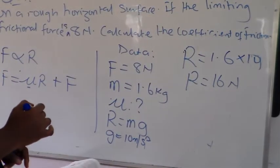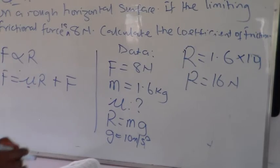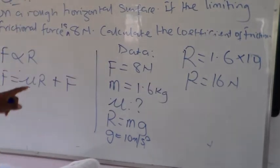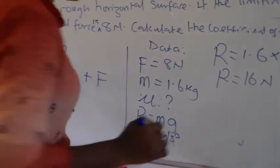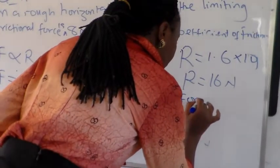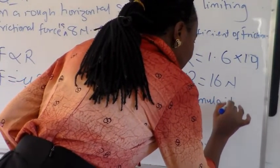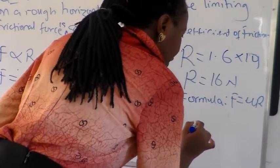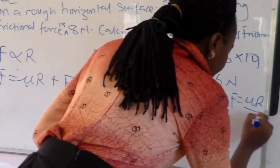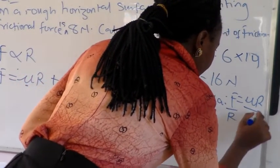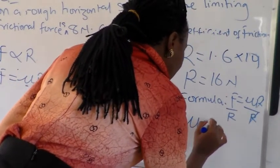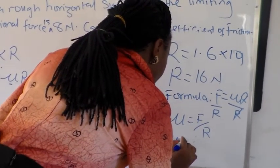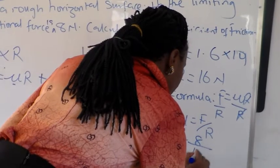So, in order to get our coefficient, we are going to substitute our R, our F to get our coefficient of friction. So, giving the formula as F equals μR. What is μ? Dividing both sides by R. So, our μ is what? F over R. Hence, we have 8 over what? 16.